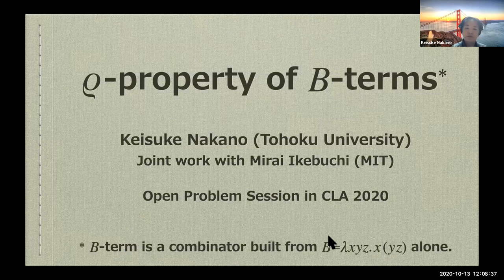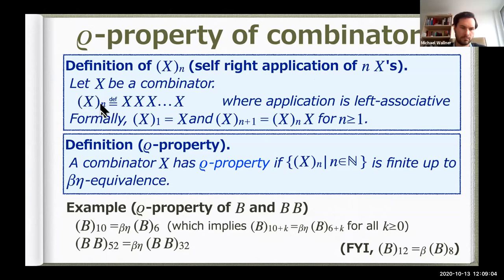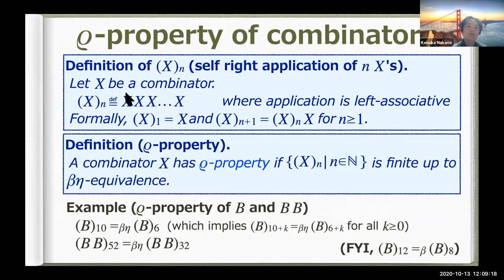A B term is a combinator built from just B and application. I call it the loop property of the B combinator. First I'd like to define self-right application — repetitive application. For example, X subscript N means X applied to itself N times. We assume application is right-associative. Formally, X_1 is just X and X_{N+1} is defined by applying X_N to X.